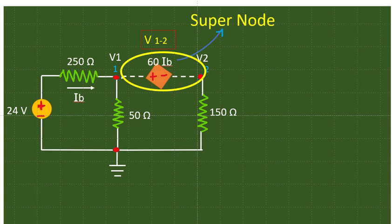In this particular problem we have a special case. This can be called as a super node. This 60Ib voltage source, that is the dependent voltage source, is available between two non-reference nodes. This node number one and the node number two are non-reference nodes, and this ground is the reference node.